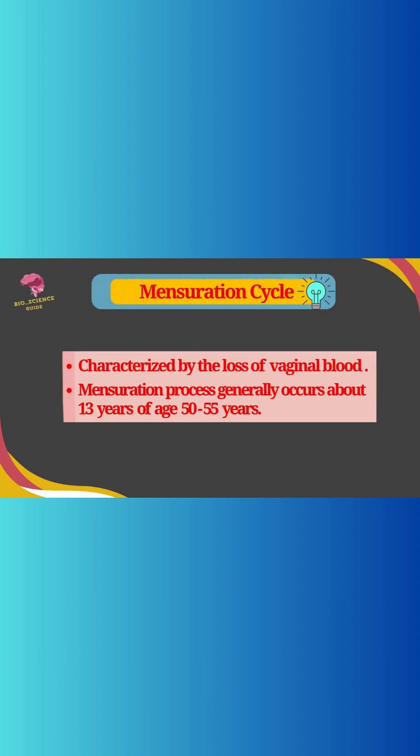The menstruation cycle is characterized by the loss of blood from the vaginal orifice. This process generally occurs around 13 years of age and continues up to the age of 50 to 55 years.